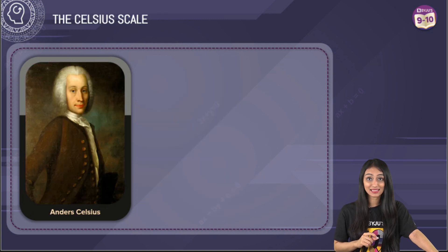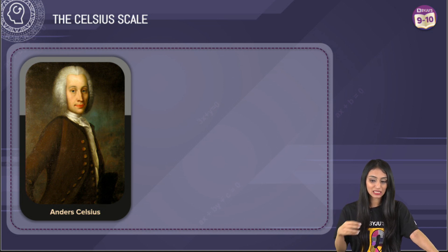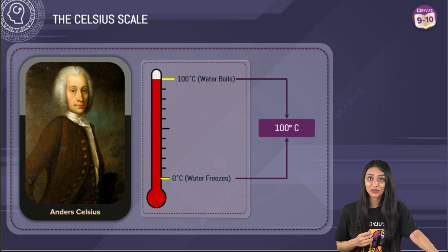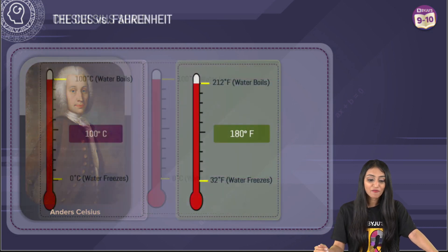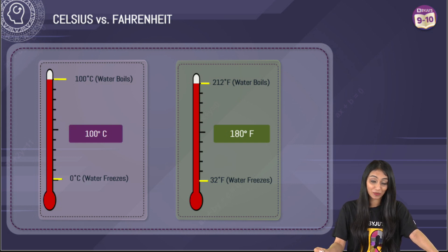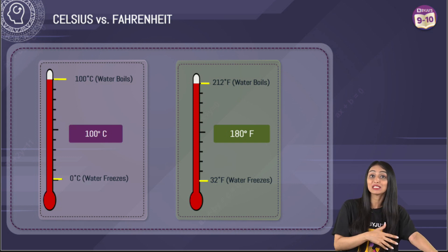Now talking about the Celsius scale — Anders Celsius actually invented it. Celsius found that the Fahrenheit scale is a little bit confusing, so he simplified it by taking smaller, simpler numbers: the freezing point of water at 0 degrees and the boiling point of water at 100 degrees Celsius, separating both these points by 100. Now we have both these scales being used in different parts of the world, and thus we need a conversion equation. But the conversion is not that simple — it's not like converting from meters to centimeters.